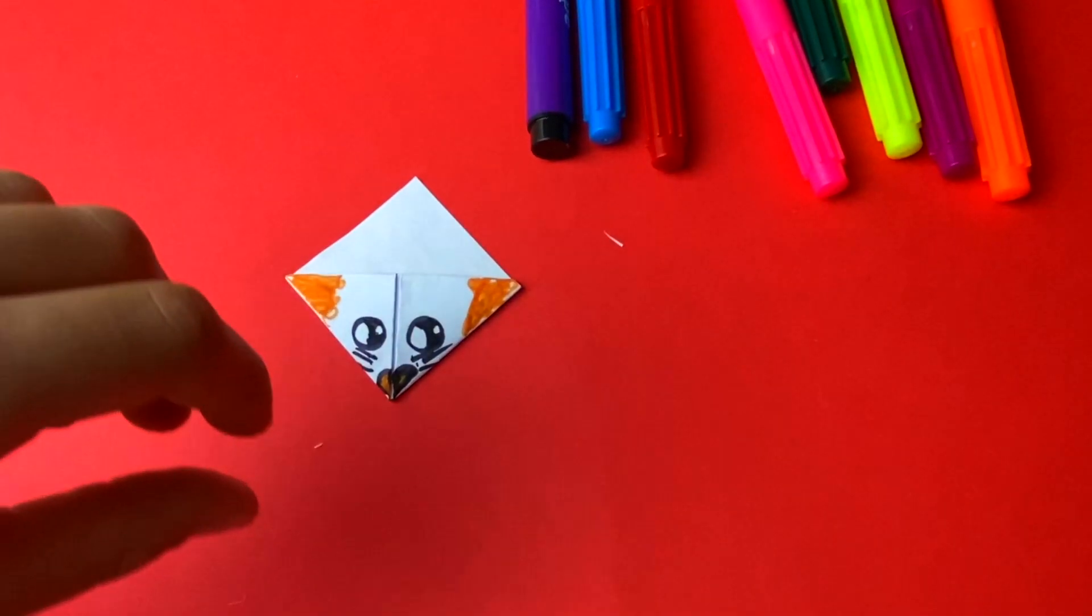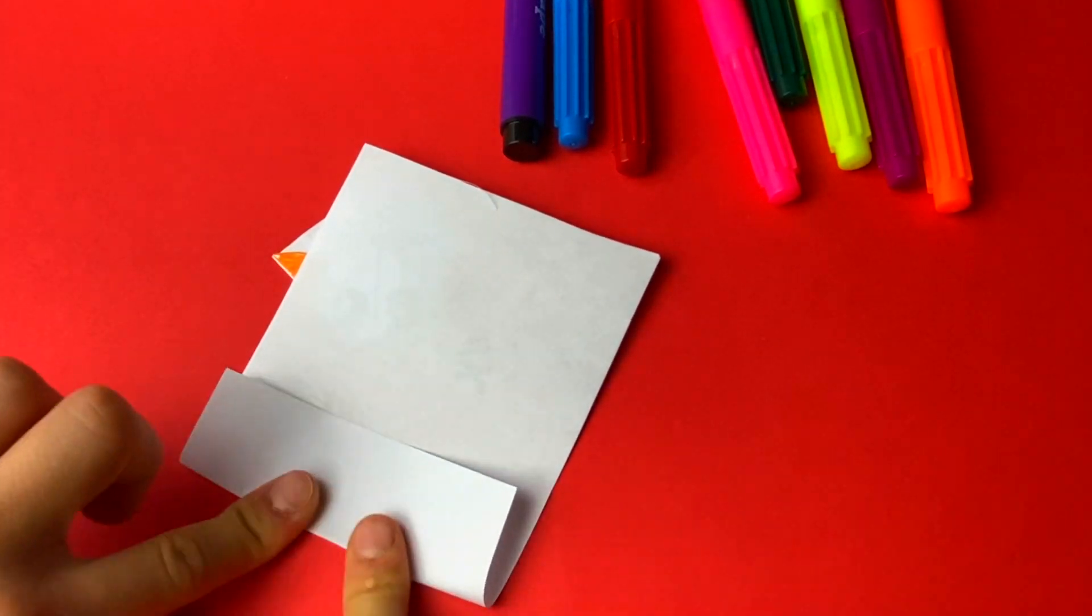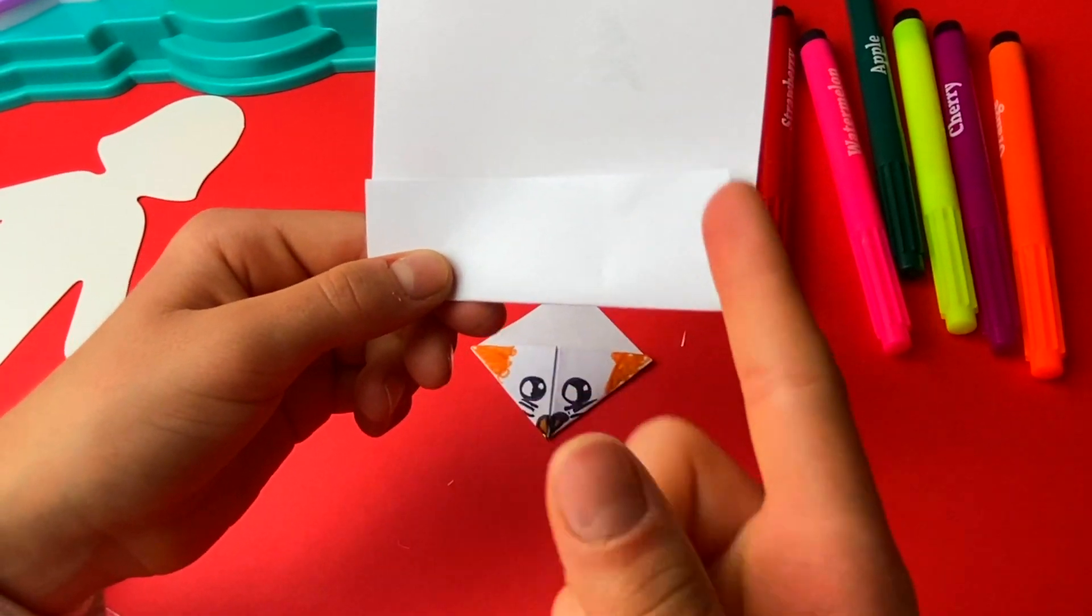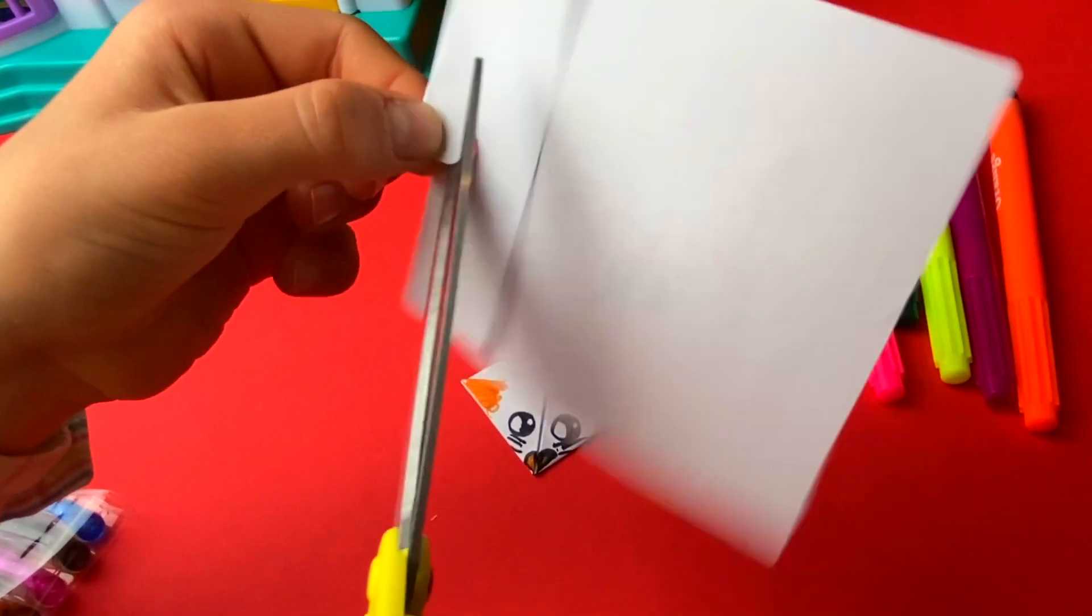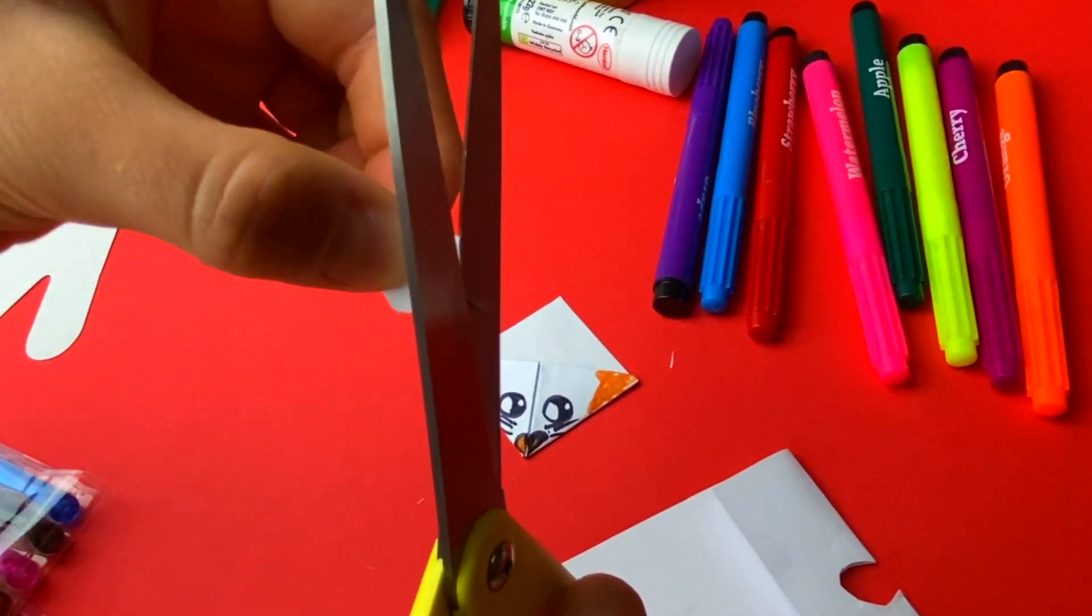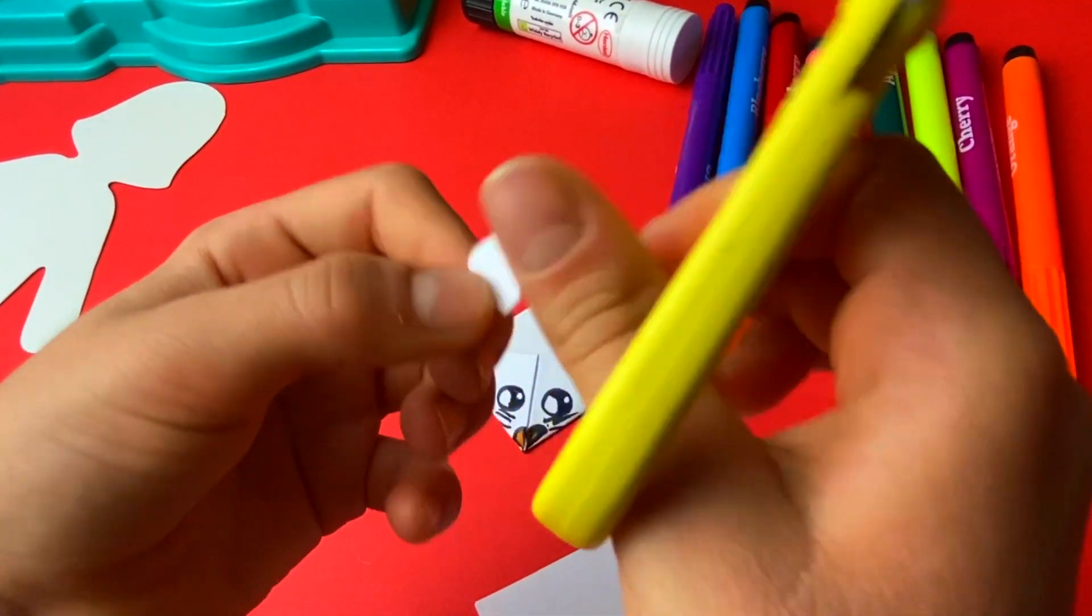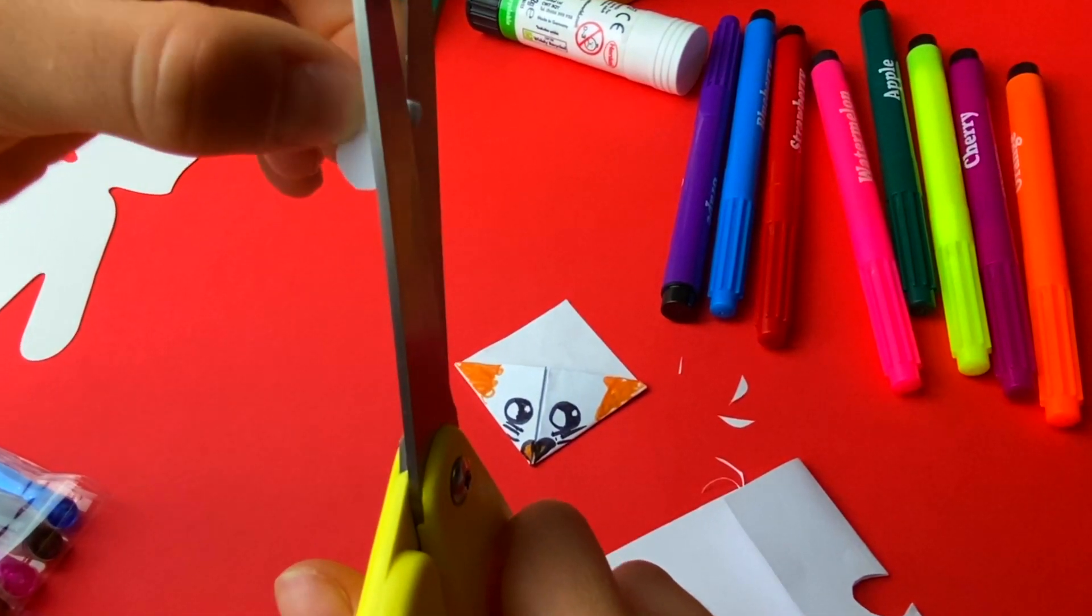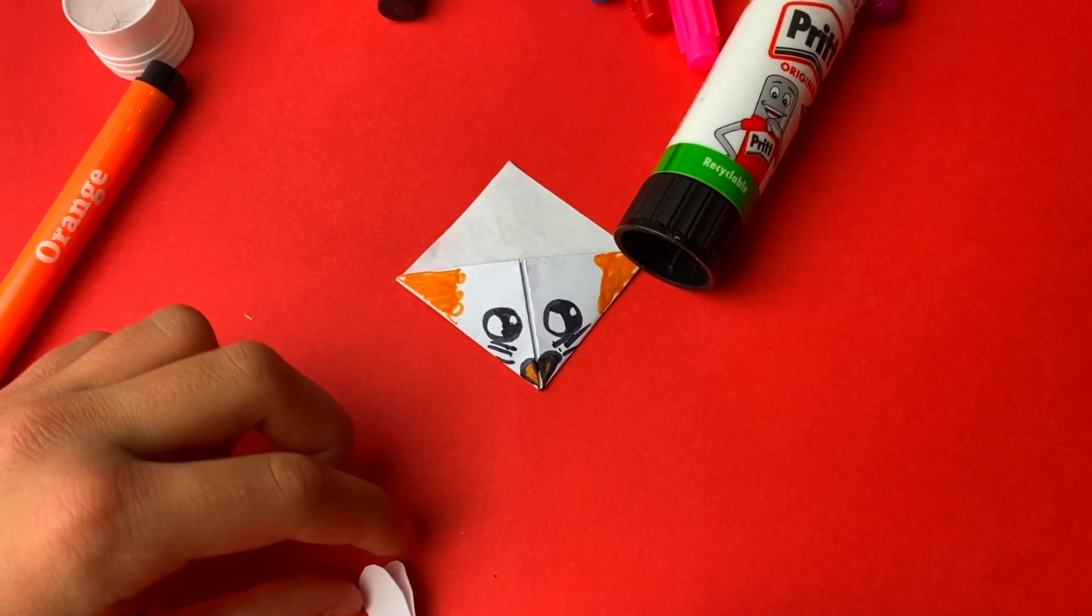And guys, now you get your spare paper, and then you fold it a bit. And then you cut out a mouse ear, only one. So guys, now I've cut out an ear.